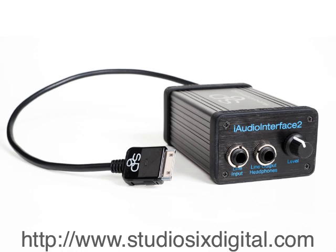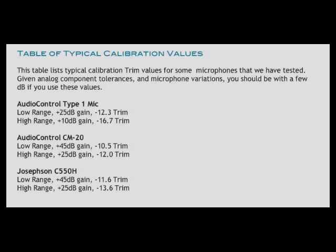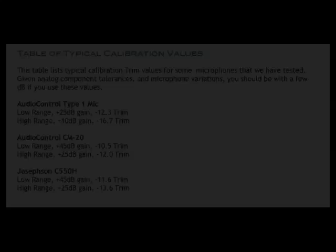You have successfully calibrated your measurement microphone using the iAudio Interface 2. If you've purchased one of the three microphone options available from Studio 6 Digital, a table of typical preamp gain and trim values is presented on our website. This will allow you to get close to a calibrated system if a reference meter or piston phone is not available to you.